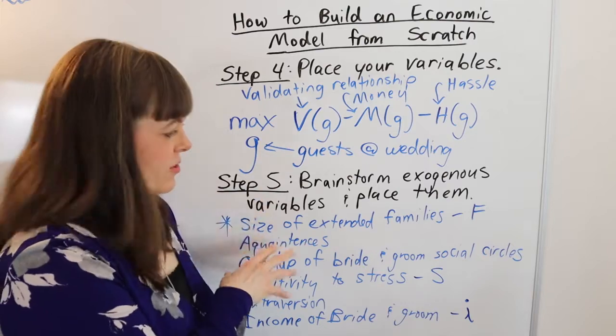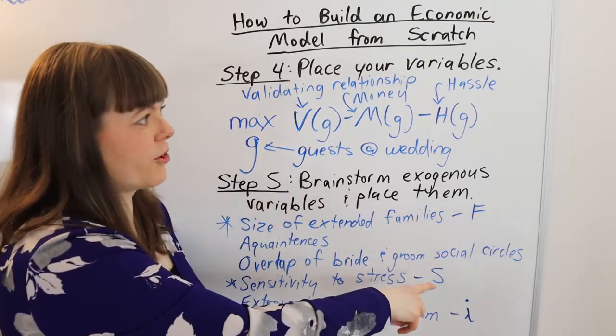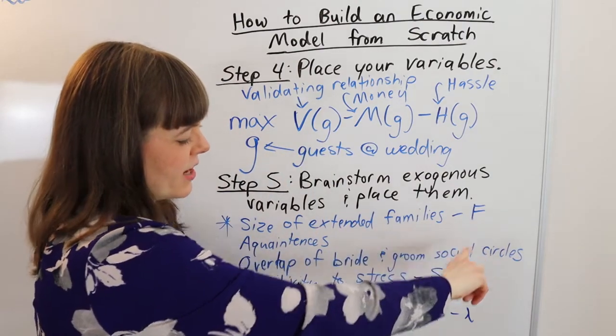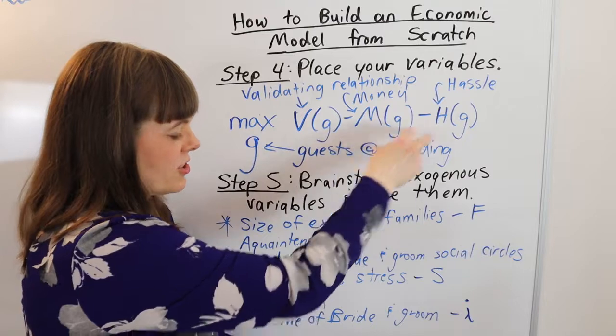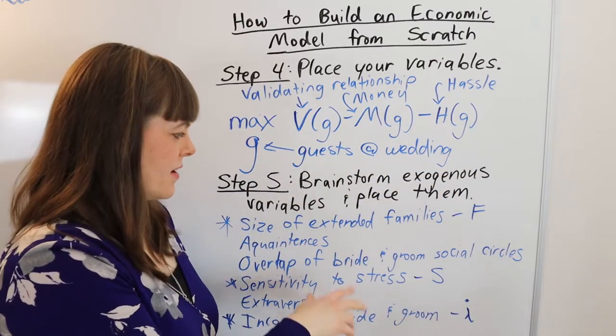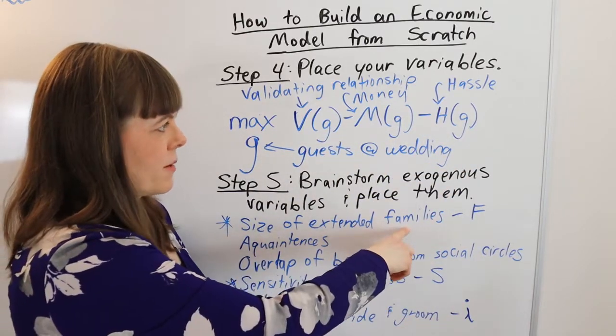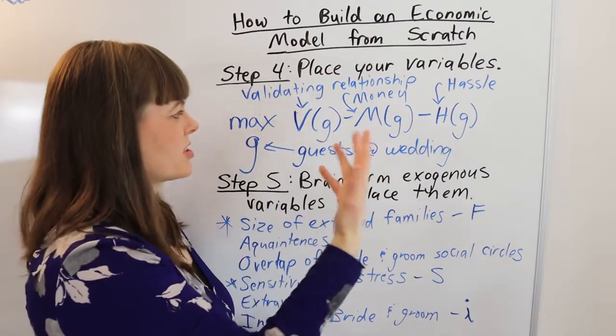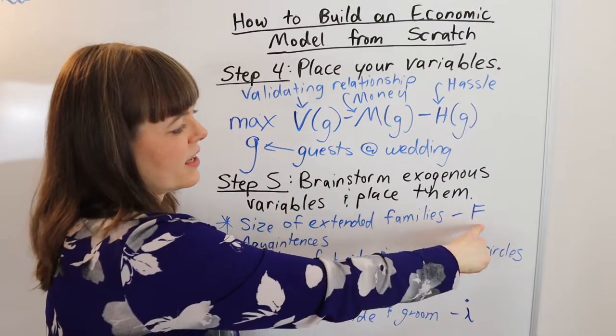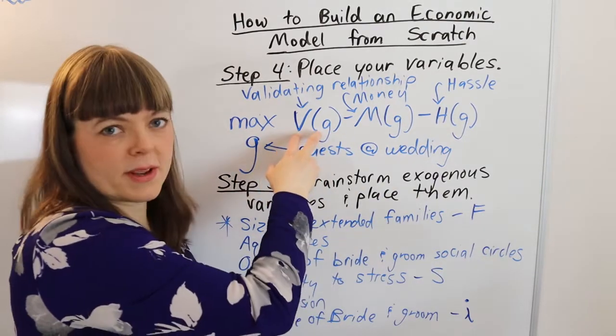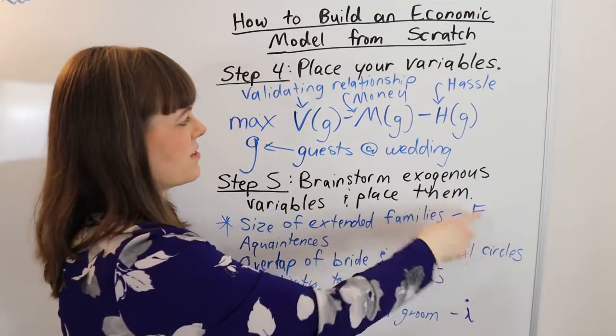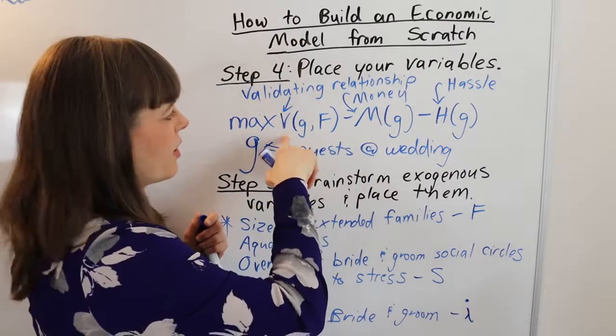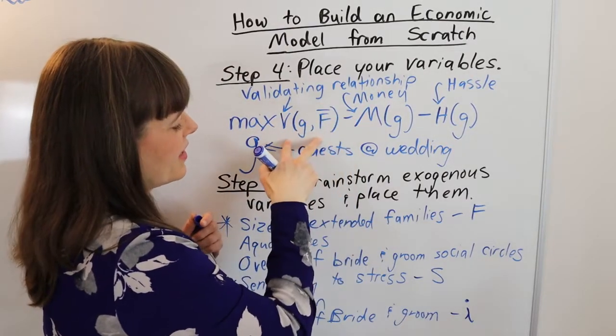So step five includes not just brainstorming and choosing a few, but also placing them into the model. Now to place these into the model, you're going to have to figure out which cost or benefit does each of these belong inside. So size of extended family, well, that's going to matter a lot for how much you're validating the relationships with that family. So basically, F belongs inside this function, you're basically going to place each exogenous variable inside the most relevant cost or benefit. So I've just stuck this new exogenous variable inside here.